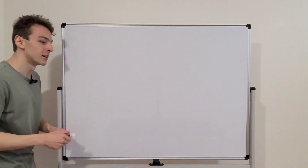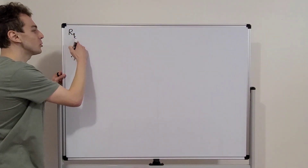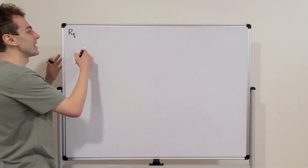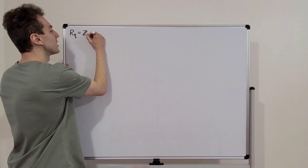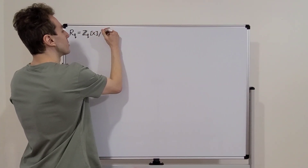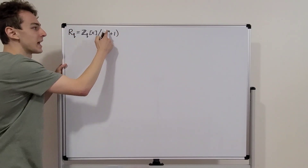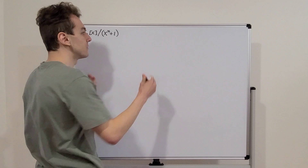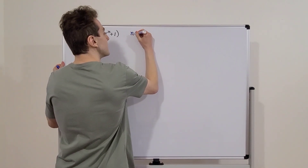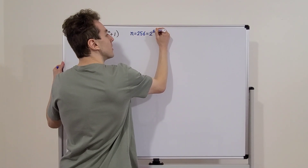To describe these algorithms, we need to define a polynomial ring, which is denoted by R sub Q. Q is a prime modulus. We can define this polynomial ring in terms of the integers mod Q and the polynomial x to the power of n plus 1. n is a constant, and we're going to set that constant equal to 256. So n is equal to 256, which is 2 to the power of 8.